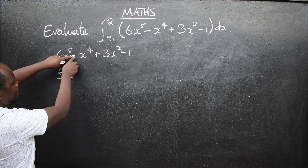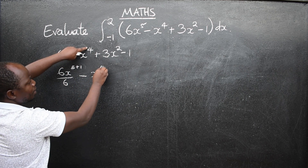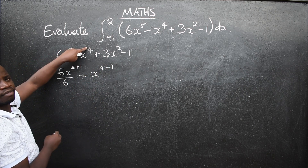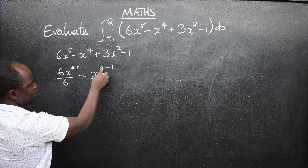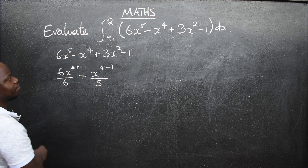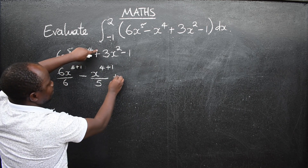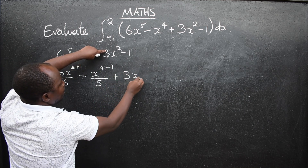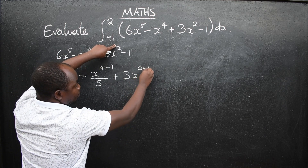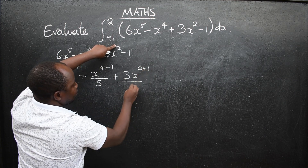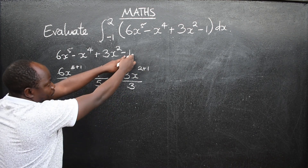Next term: minus x to the power 4. Add 1 to get power 5, then divide by 5, giving minus x to the power 5 over 5. Next, plus 3x squared: add 1 to get power 3, divide by 3, giving x to the power 3.